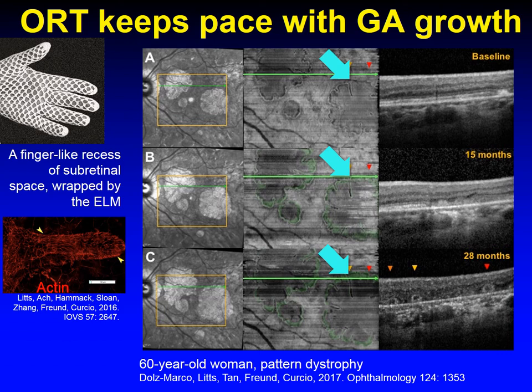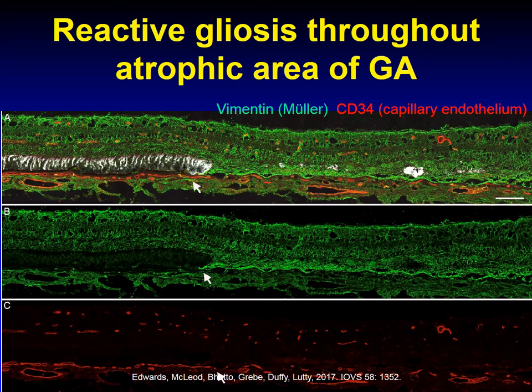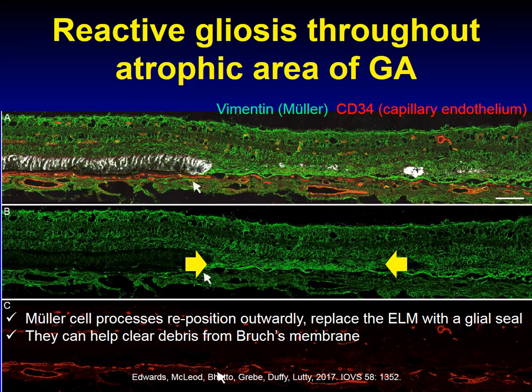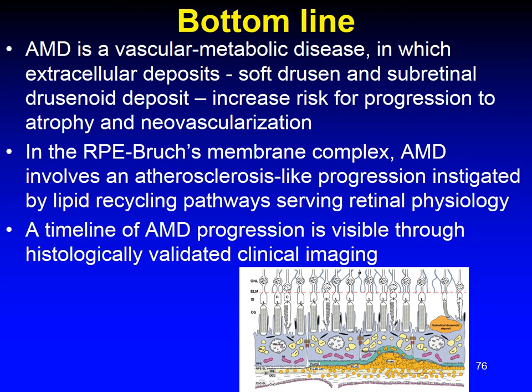The Mueller cells appear to be scrolling up the retina like a window shade in advance of the atrophy. We believe this is to protect the surviving photoreceptors or to sequester toxic debris inside the GA zone, or both. Reactive gliosis is present throughout the atrophic area of geographic atrophy. Here is an ELM descent where Mueller cell processes reposition outwardly, extend horizontally, and replace the ELM with a glial seal. The Mueller cells also help clear debris from Bruch's membrane.